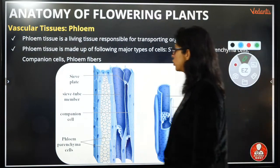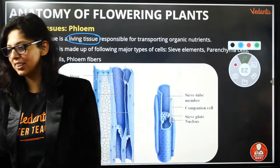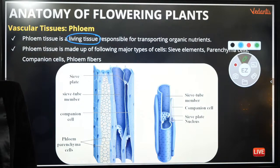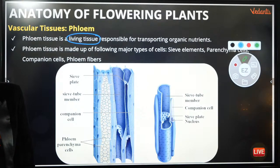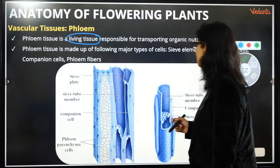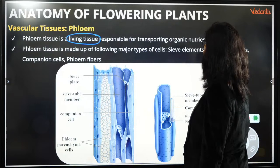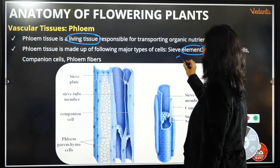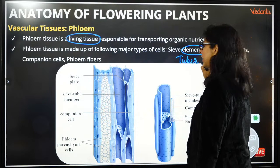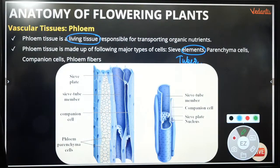Phloem is a living tissue responsible for transport of organic nutrients — the food. It is made up of sieve elements (also called sieve tubes), parenchyma cells, companion cells, and phloem fibers. An important point: 'sieve elements' is a term used for gymnosperms; for angiosperms, because they are arranged one above the other, we use the term 'sieve tubes'. Companion cells are absent in pteridophytes and gymnosperms.